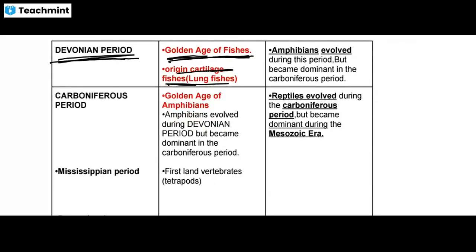During the Devonian period, Amphibians evolved, but they became dominant in the Carboniferous period.